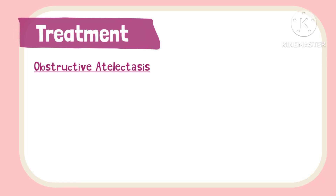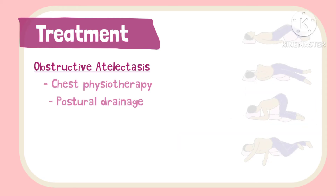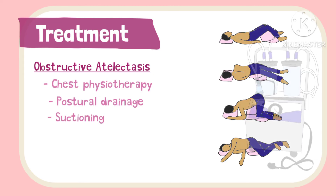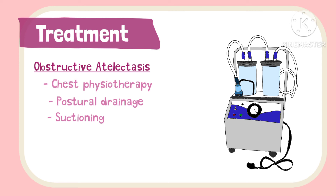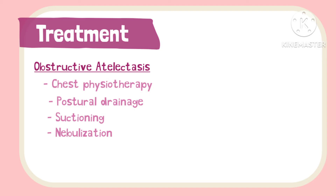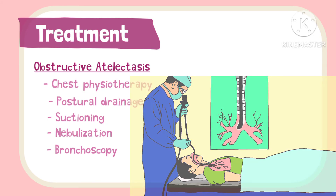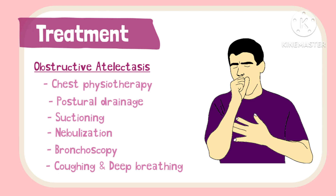Mild forms of obstructive atelectasis are treated with simple measures such as chest physiotherapy including chest percussion and postural drainage. Suctioning helps in removing secretions that obstruct air flow, while nebulization with bronchodilators may help in clearing thick mucus and facilitating air movement into the alveoli. In cases where obstruction is severe, bronchoscopy is done to remove the obstruction. Patients are encouraged to cough and perform deep breathing exercises to facilitate alveolar expansion.